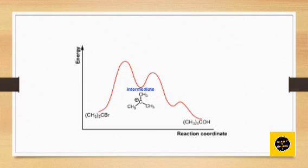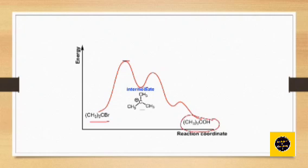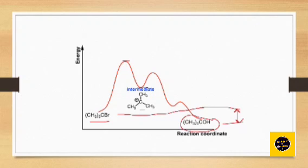Looking at the energetics: we start with the substrate, and after passing through a high-energy transition state, there is an intermediate — the carbocation. The carbocation is then driven further to form the product because of the low energy of the product. Every substance tries to be in a low energy state because low energy means stability; high energy means higher reactivity and instability. Comparing the energies, we see that the product is more energetically stable than the reactant.